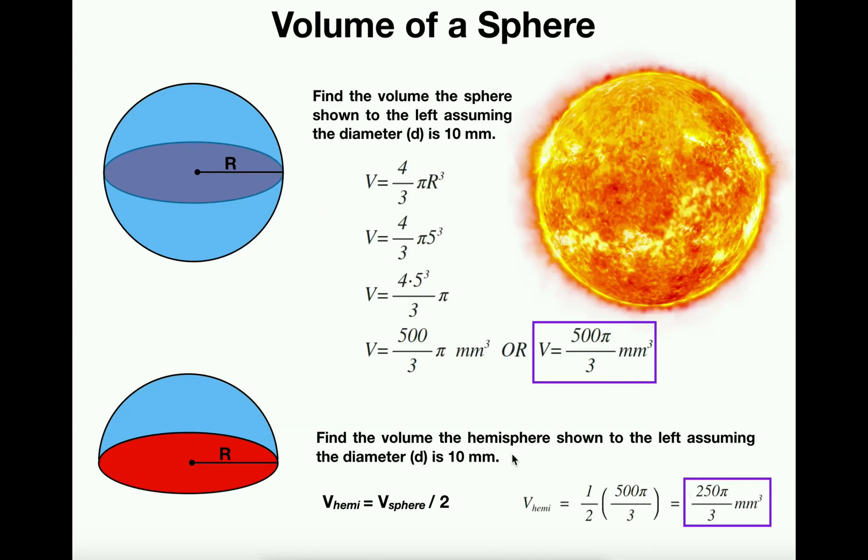But if you recognize that a hemisphere is half of a sphere, then you just take whatever you got and multiply it by a half, or you could think of it as dividing by two. If you multiply 500 pi over 3 times a half, you get 250 pi over 3, because 250 is half of 500. And so the volume of the hemisphere is just 250 pi over 3 cubic millimeters.